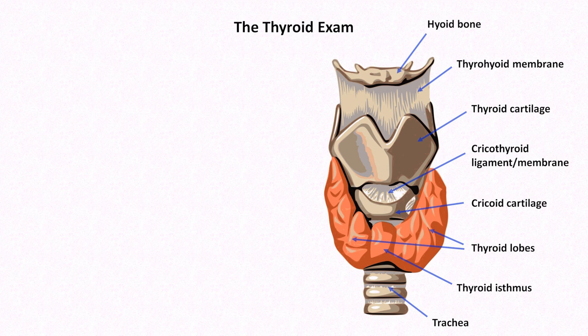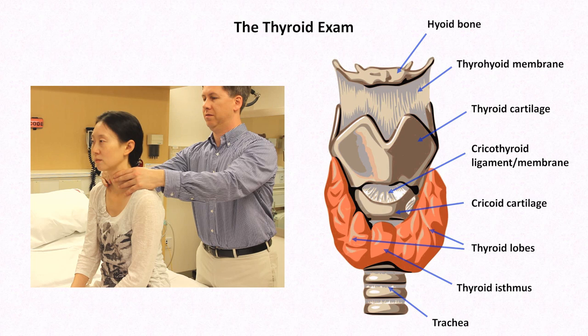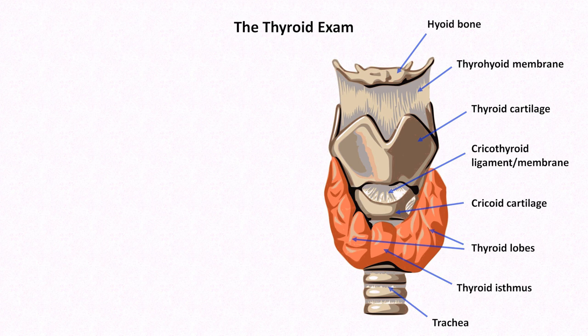Palpation can be performed from two different approaches: the anterior approach, in which the examiner stands directly in front of the patient, or the posterior approach, in which the examiner is behind the patient and wraps his or her hands around the neck. From the patient's perspective, the anterior approach is presumably preferred by most, although some clinicians feel the posterior approach increases sensitivity for finding subtle abnormalities. How an individual clinician weighs these two concerns is a matter of personal preference.